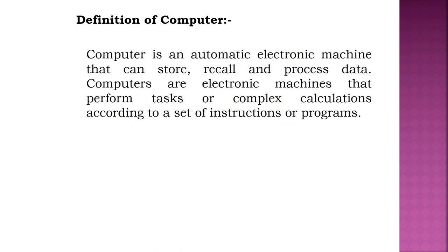Now let us see the definition of computers. A computer is an automatic electronic machine that can store, recall, and process data. Computers are electronic machines that perform tasks or complex calculations according to a set of instructions or a program.